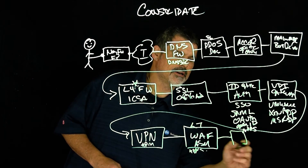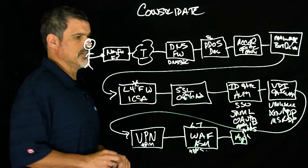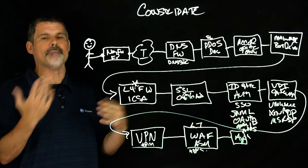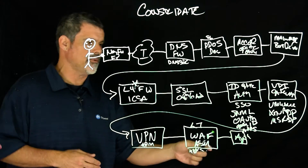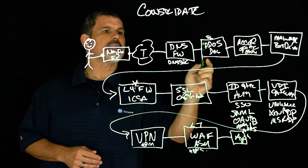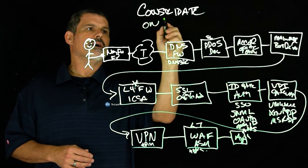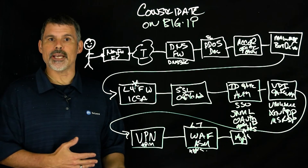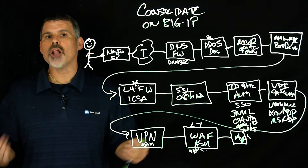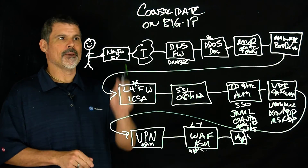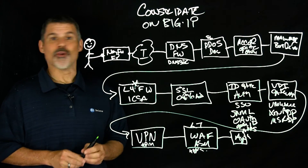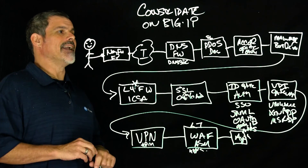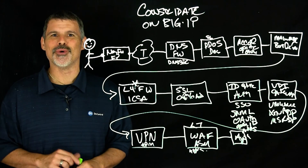And then we get to your app locations. Those are not all of the things, but some of the primary services that you can consolidate — 11 total on BIG-IP. You get traffic management, security, access, and optimization, all on a highly programmable platform: BIG-IP. Thanks for watching. If you liked this Lightboard Lesson, please subscribe to DevCentral's channel. I'm Peter, and we'll see you in the community.